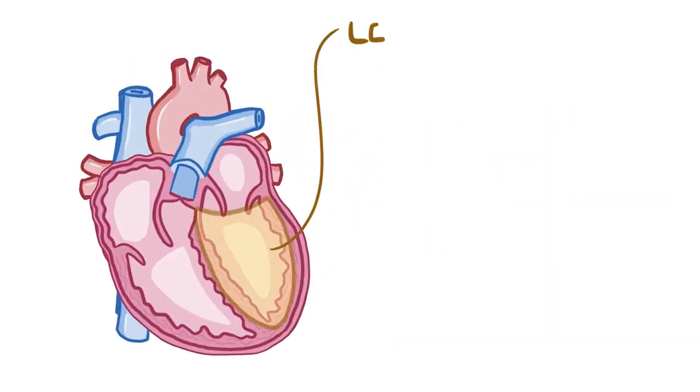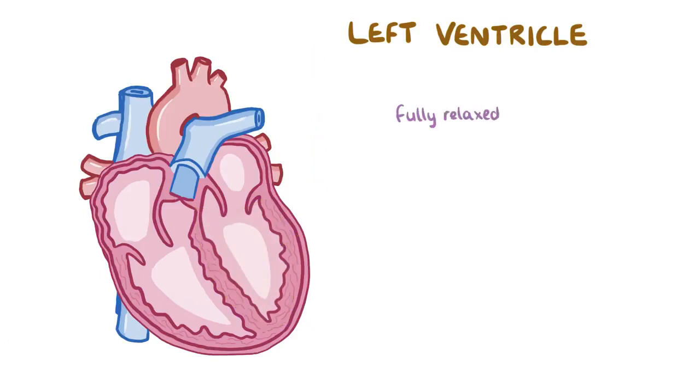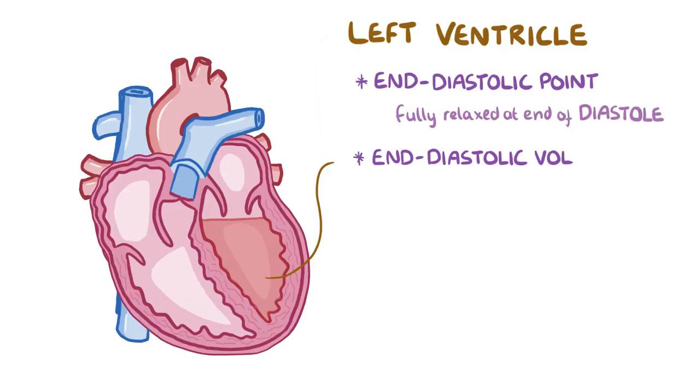Now let's zoom in to the left ventricle. There's a moment when the left ventricle is fully relaxed and it occurs at the end of filling or diastole, also called the end-diastolic point. The volume of blood within the left ventricle is called the end-diastolic volume and it's about 120 milliliters.